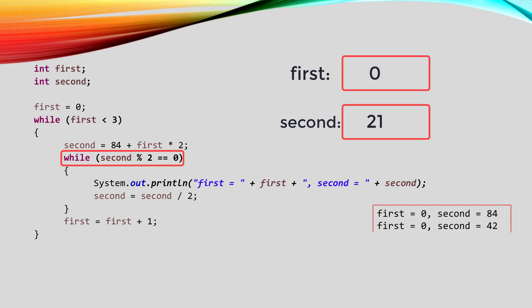This time, when the loop checks its condition, it's going to take the 21 in second and divide it by two. The remainder of that is one, so the condition for this inner while loop is false, which will make that while loop stop running. The next statement that gets executed will increment the variable first, and it will become one. Then we're at the bottom of the outer loop, so we go back up to the top of that outer loop.